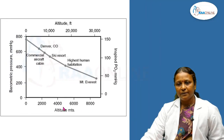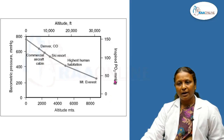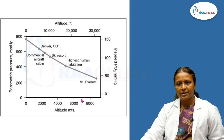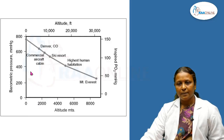In this picture you can see height in meters and height in feet. On the right side you have the partial pressure of oxygen, and on the left side you have the barometric pressure. As the height increases, the barometric pressure decreases. At sea level, the barometric pressure is around 590 mmHg. As barometric pressure decreases, the partial pressure of oxygen also decreases.